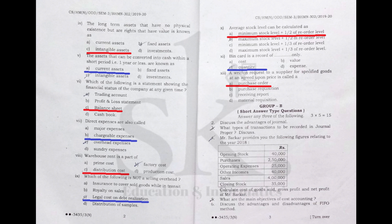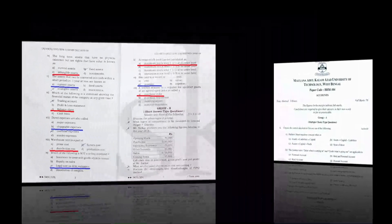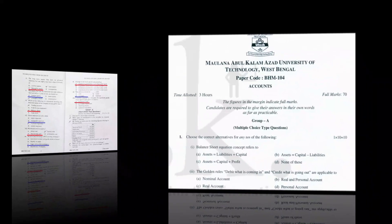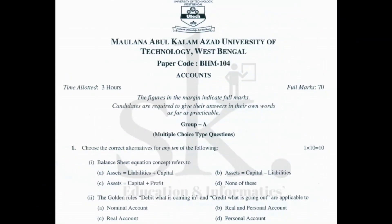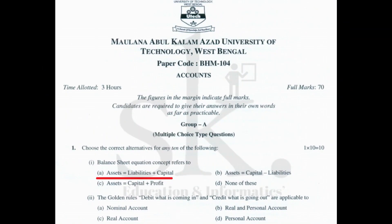Moving to the 2018 question paper: question number one — balance sheet equation concept refers to assets being equal to liability plus capital, since on the liability side we have liability and capital, and the other side is assets. The correct option is A.